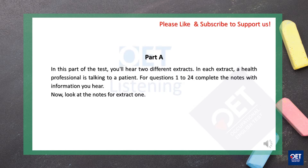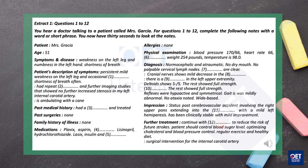Part A. In this part of the test you will hear two different extracts. In each extract a healthcare professional is talking to his patient. For questions 1 to 24, complete the notes with the information you hear. Now look at the notes for extract 1. Extract 1, questions 1 to 12. You hear a physician talking to a new patient called Mrs. Delilah. For questions 1 to 12, complete the following notes with a word or short phrase. You now have 30 seconds to look at the notes.